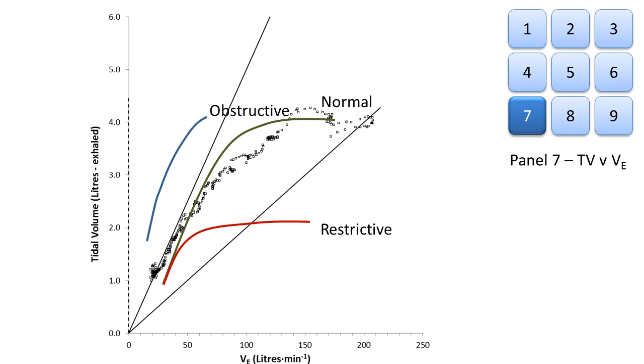If the pattern doesn't follow these general patterns, but instead shows a different type of shape or even no relation to one another and quite a chaotic spread, this may be indicative of a degree of dysfunctional breathing.